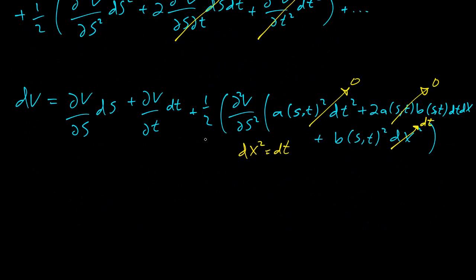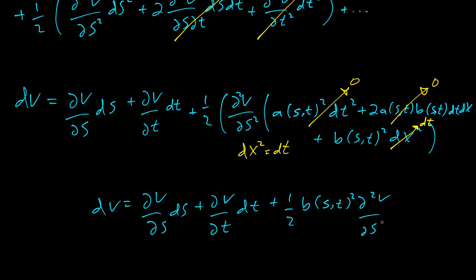And so what do we have? We have DV equals partial with respect to S, DS, plus the partial with respect to T, DT, plus one half b squared, second partial with respect to S, DT.